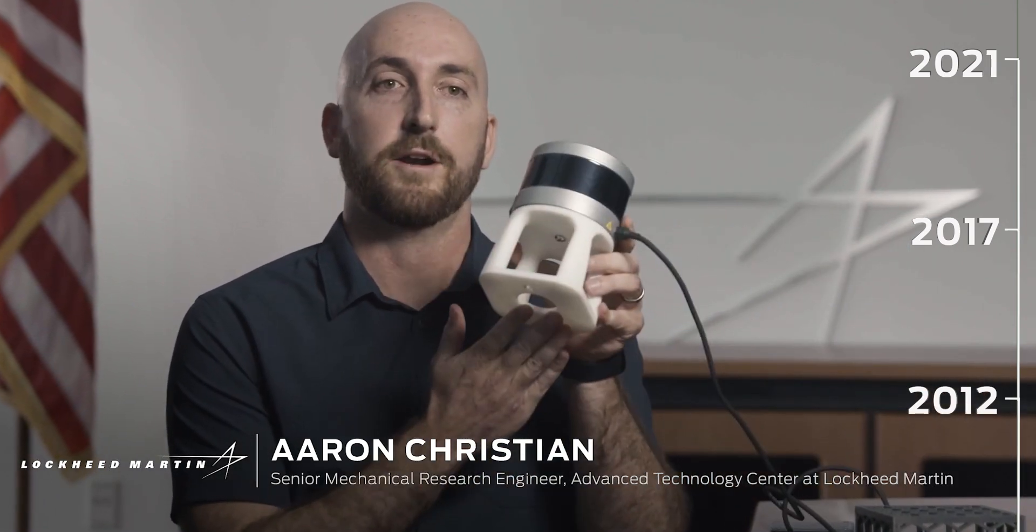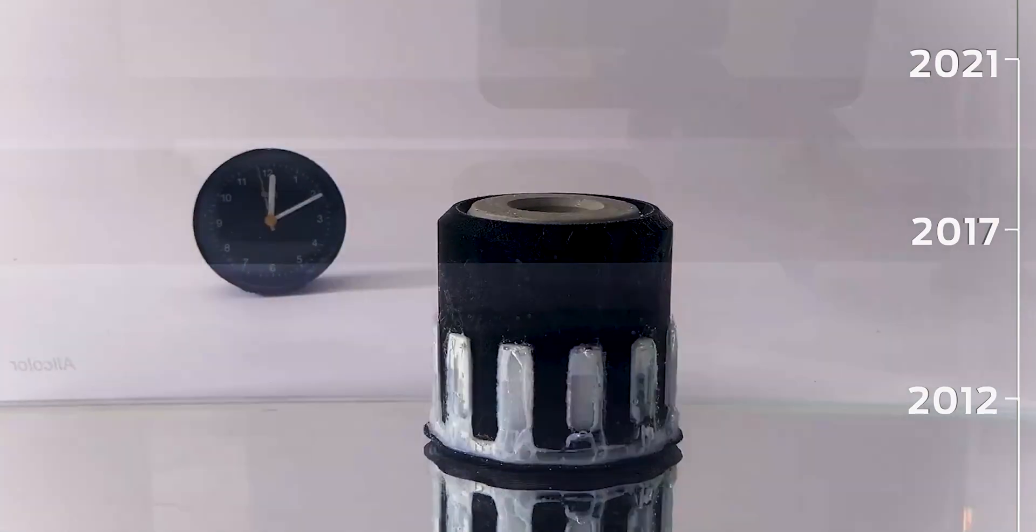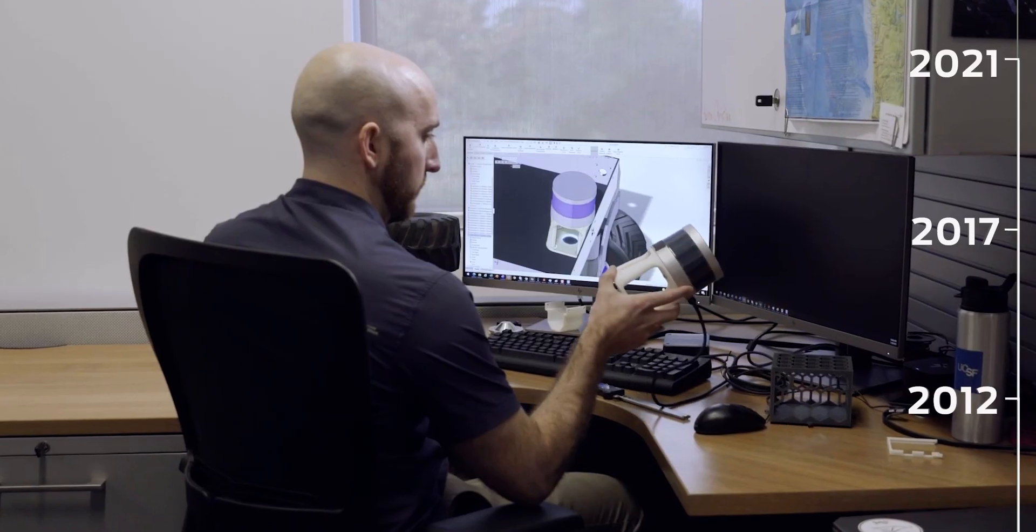This is a LiDAR mount. We use it for a lot of our autonomy projects. Dissolvable support material allows us to print single parts like this.